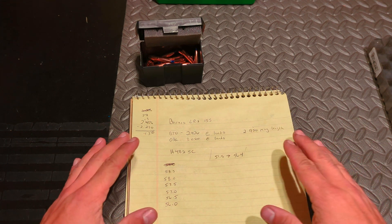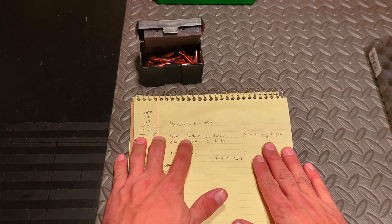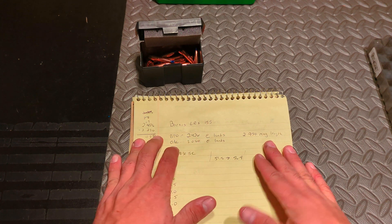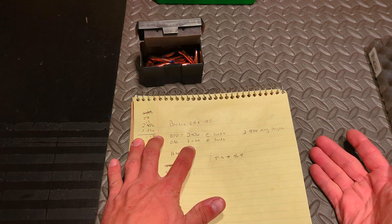But essentially, my base to ogive at jam is 2.426 at the lands, and that would make my overall length at 3.080.